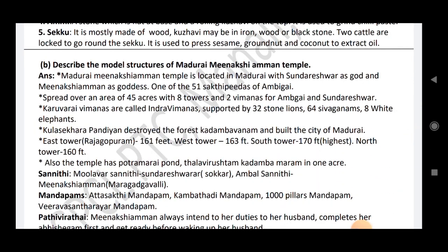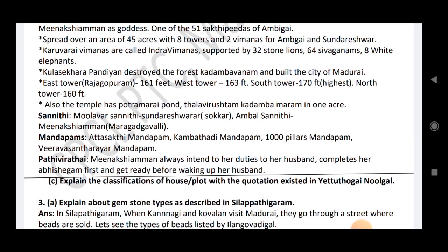Describe the model structure of Madurai Meenachayaman Temple. The temple is located in Madurai with Sundareswarar as the main deity. Meenachayam is the goddess, one of the 51 shaktipeethas of Ambihai. It covers an area of 45 acres with 8 towers and 2 vimanams for Ambihai and Sundareswarar. Karuvari Vimanam is called Indra Vimanam, supported by 32 stone pillars, 64 Sivakams and 8 white elephants. Kulasegara Pandian destroyed the forest Kadambavanam and built the city of Madurai. East tower Rajagoburam: 161 feet; west tower: 163 feet; south tower: 170 feet; Highest Nath tower: 160 feet. Also Rathambulayas, Potramaray Bond, Thalai Vircham, Kadamba Marani, Uniyakar, Sannidhi, Moolavar Sannidhi, Sundareswarasukkar, Ambal Sannidhi, Meenachee, Maragadavalli.